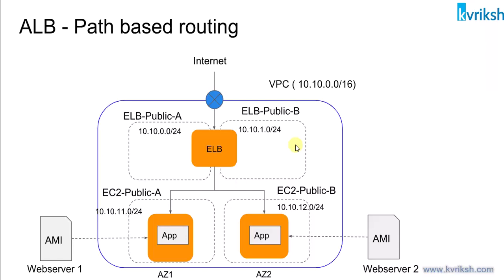Hello, this is Chetan, welcome to this video. In this exercise, we want to see the application load balancer and how to perform path-based routing. Path-based routing is a useful feature of a load balancer where you can redirect backend traffic to different groups of EC2 instances based on the URL path. For example, for a particular application you might have multiple versions like v1 and v2.